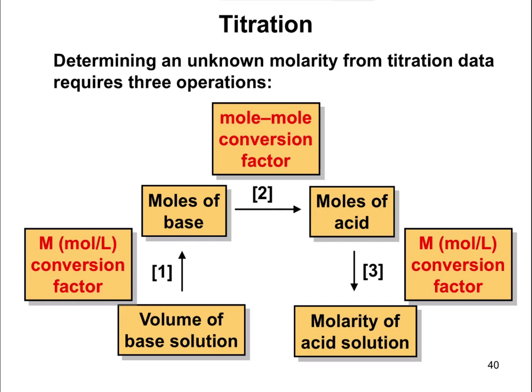Doing a titration problem requires three conversions. Basically, you can start with the volume of one solution and convert to moles — here it says volume of base. Don't try to memorize this flowchart too closely; you have to be a little bit flexible depending on if you're trying to determine an unknown acid or an unknown base. Volume of base solution, you can figure out the moles of base, then convert moles of one thing to moles of another using a mole conversion factor. And then once you know the moles of acid, you can figure out the molarity of the solution or the volume of the solution.